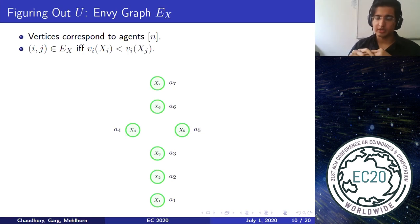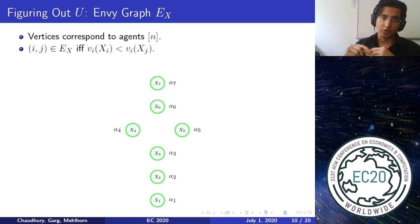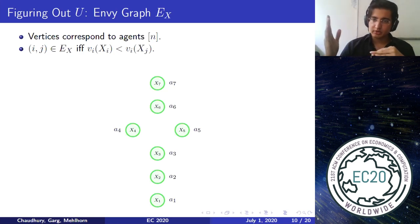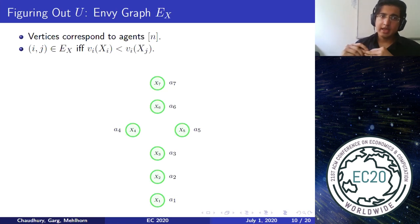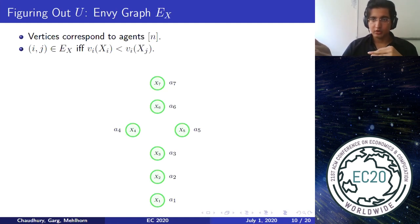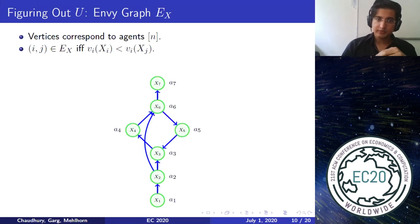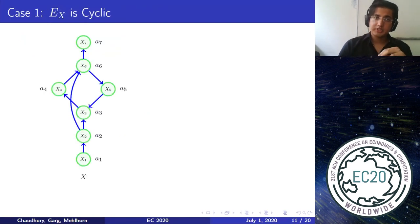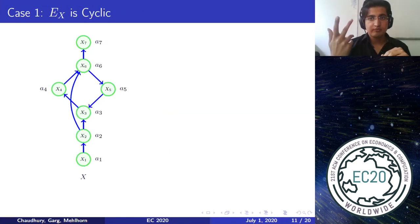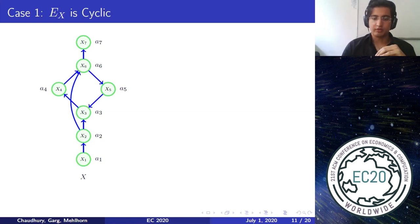With that in mind, let's look at an easy case — the envy graph. Given an allocation X1 up to Xn, I define the envy graph where vertices correspond to agents, and there is a directed edge from agent i to agent j if i envies j. This is specific to a particular allocation. If the partial allocation has an envy graph that is cyclic, then we can easily come up with another partial EFX allocation where every agent is at least as happy.